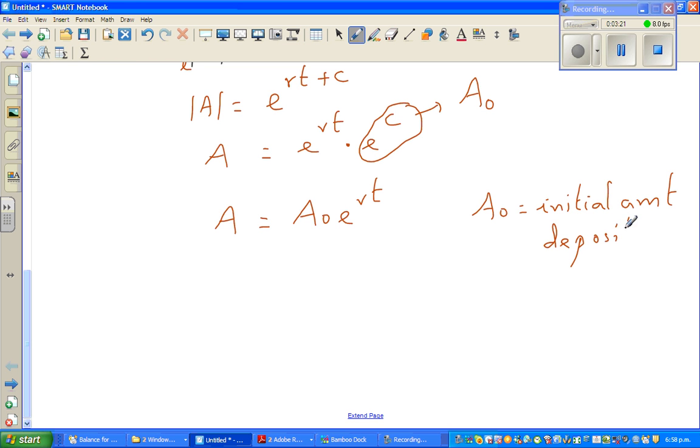This does make sense. So the amount that you get after a particular time is A_0, which is the initial amount, times e to the power rt.